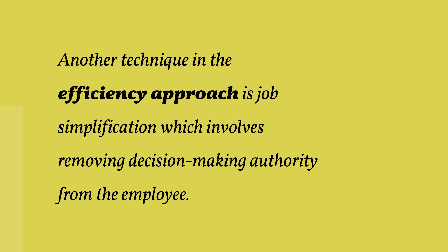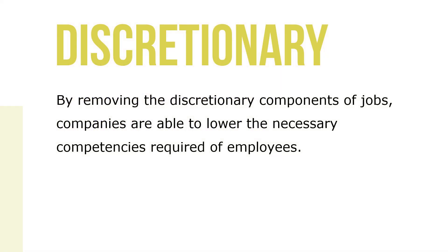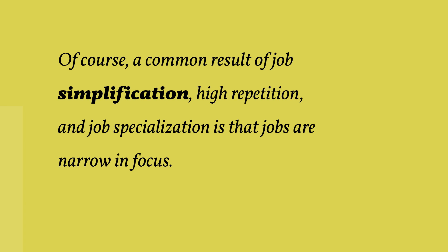Another technique in the efficiency approach is job simplification, which involves removing decision-making authority from the employee and placing it with the supervisor. By removing the discretionary components of jobs, companies are able to lower the necessary competencies required of employees. One benefit is that this opens up a wider pool of job applicants and jobs can be staffed faster. Job simplification also reduces the amount of time that employees might spend thinking instead of doing their jobs, and employee training can be more focused and as a result more cost effective. Of course, a common result of job simplification, high repetition, and job specialization is that jobs are narrow in focus without much, if any, discretion afforded to employees. These jobs could be performed efficiently, but they often lack complexity and variety, which can lead to boredom, fatigue, and diminished job satisfaction.